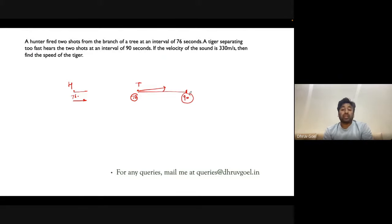This means the tiger has covered some distance. The actual time between shots is 76 seconds, but the tiger hears them 90 seconds apart. That means the sound needs an extra 14 seconds to reach the tiger. At what speed? 330 meters per second. So the distance covered is 330 multiplied by 14.